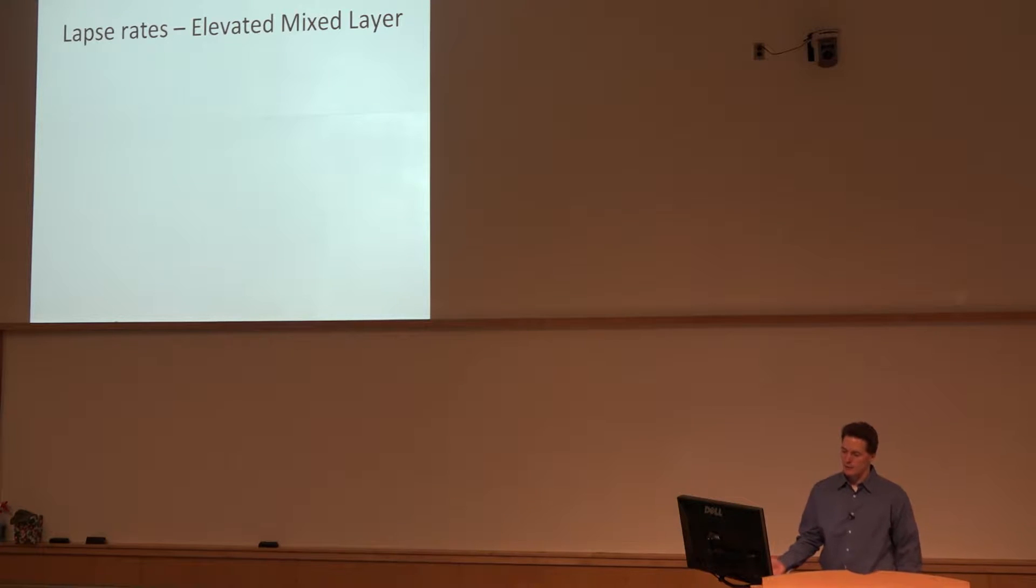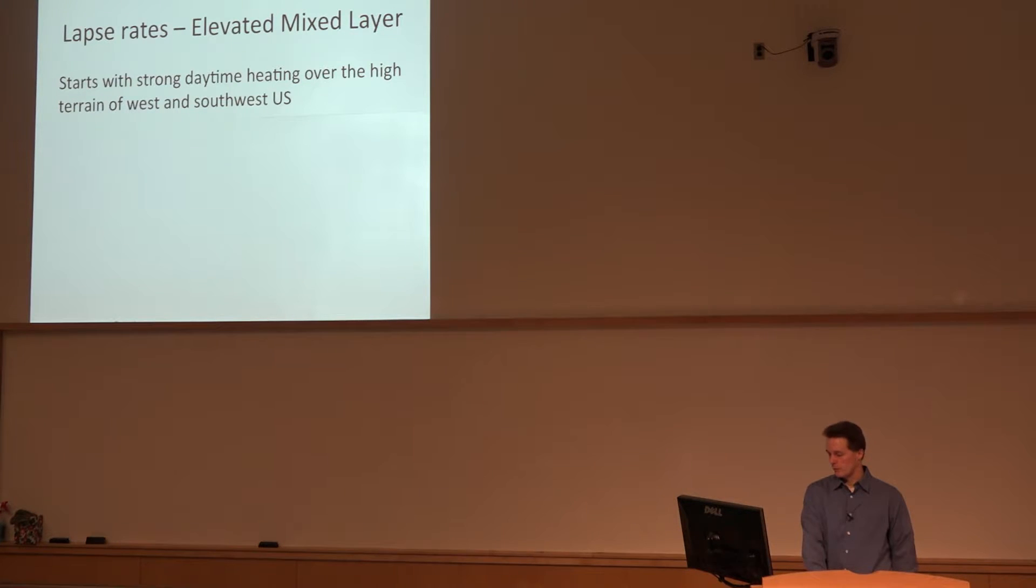When we talk about lapse rates, at least in the central United States, we're primarily referring to what we call the elevated mixed layer. This starts with strong daytime heating and mixing over the high terrain of the western and southwestern United States, so the plateau. Most of the elevations out there are anywhere from five to ten thousand feet above sea level, so the heating and mixing there, when you transfer that air over the lower elevations to the east, we can set up an interesting structure in the vertical which favors severe storm development.